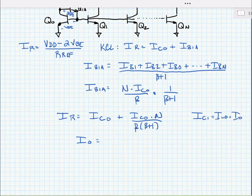we can write that the output current is equal to IR divided by 1 plus N divided by beta times beta plus 1.